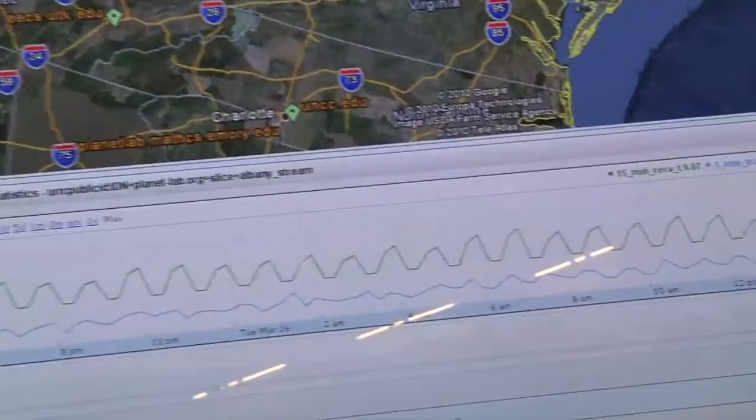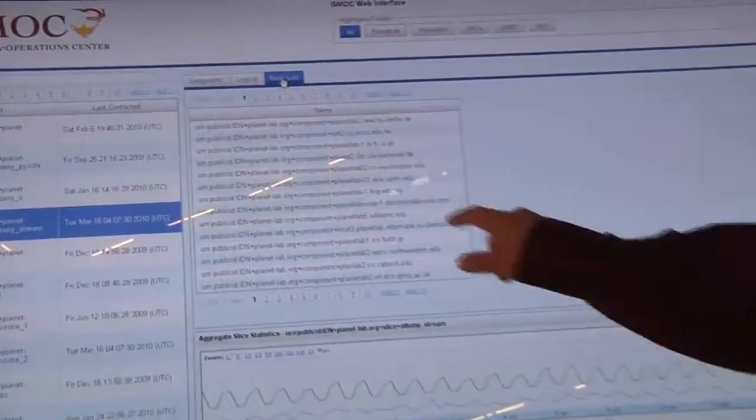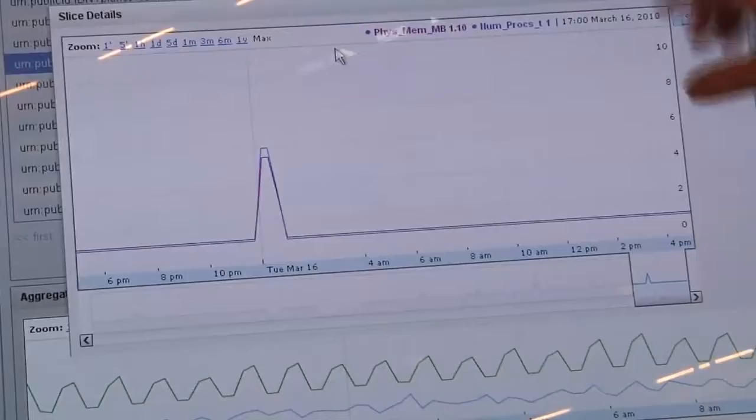In addition to the aggregate statistics, we can also get per node, per slice statistics. If we go back here to the node list, here we have a list of all the nodes in this particular slice, and we can click on one of these and get data for just this particular node. So this is the per slice, per node view.